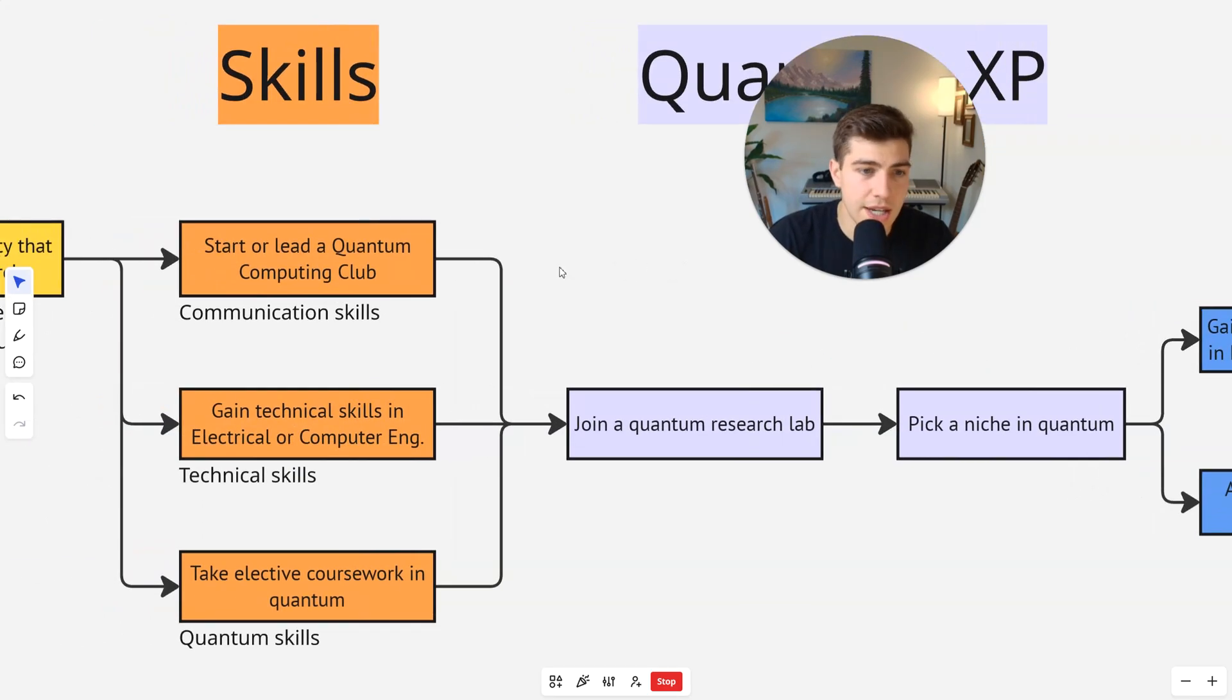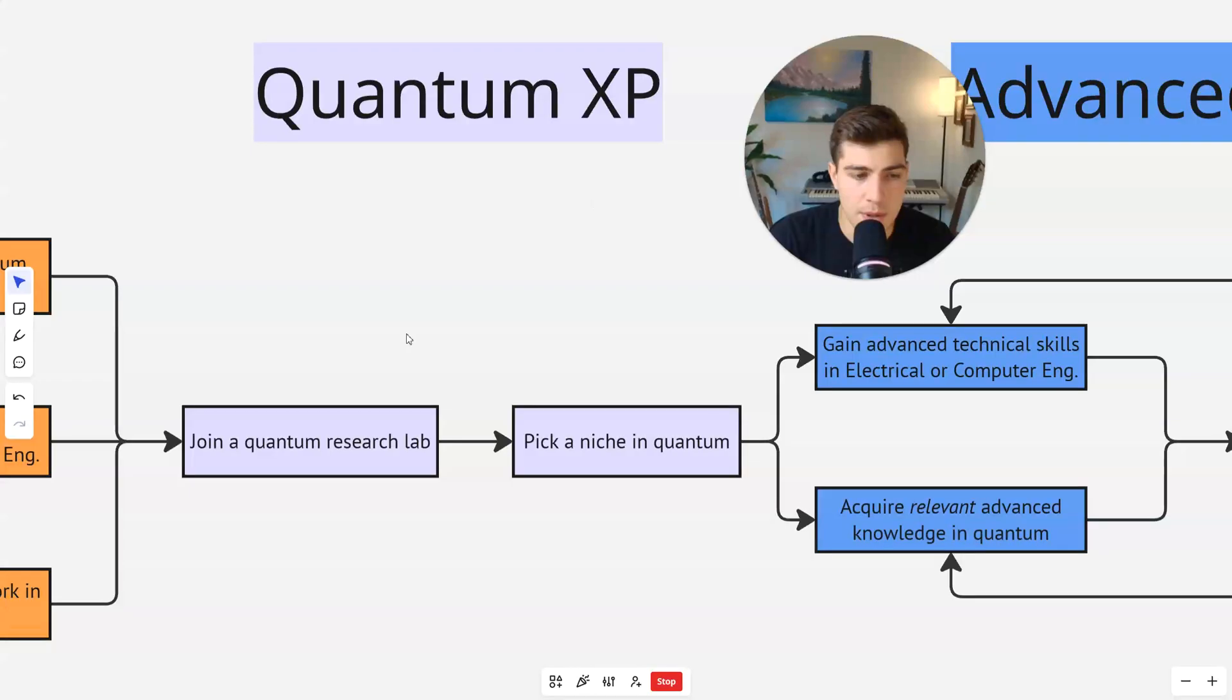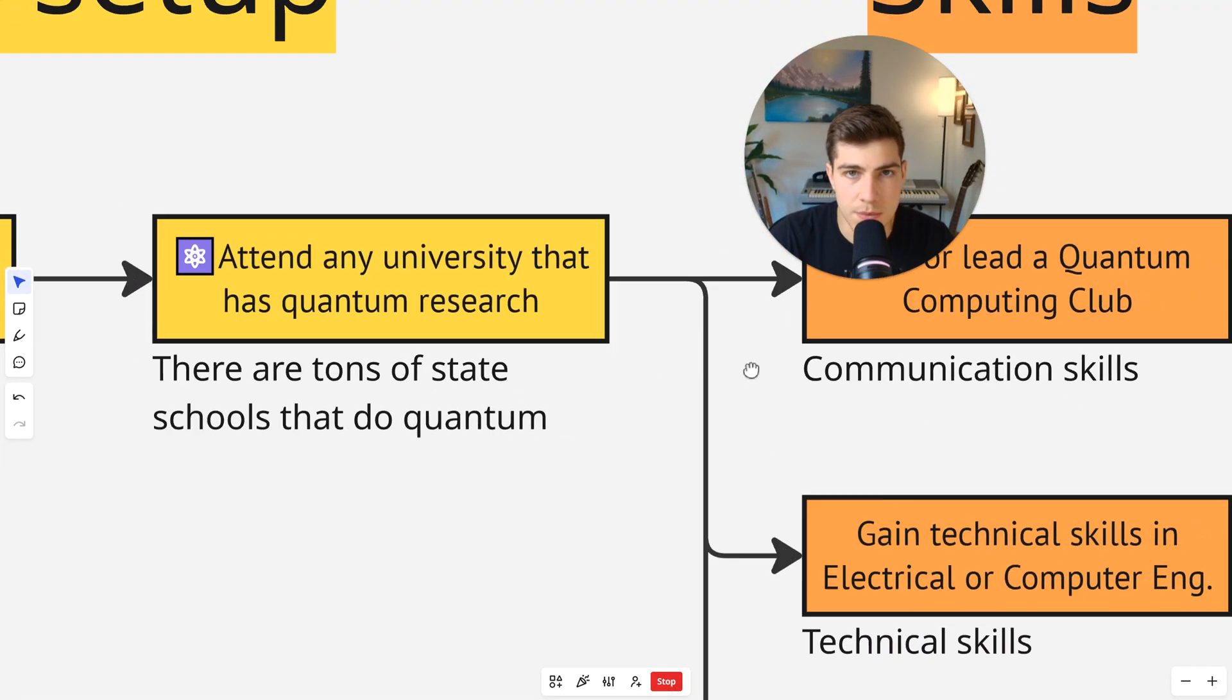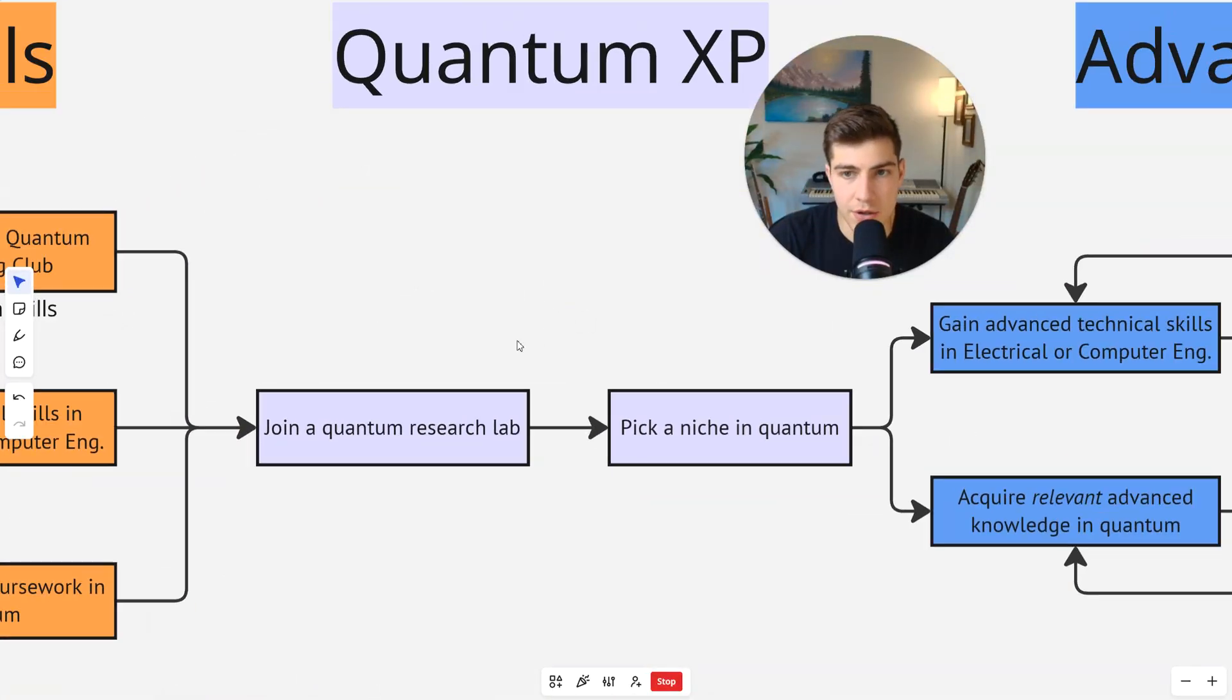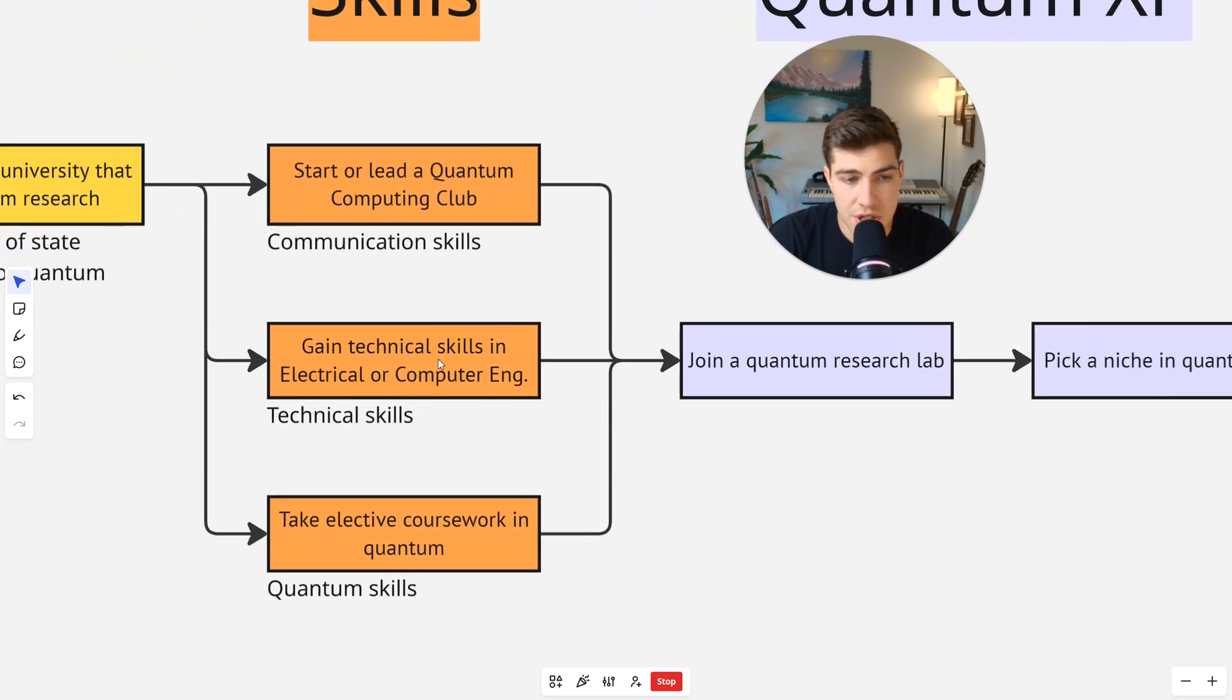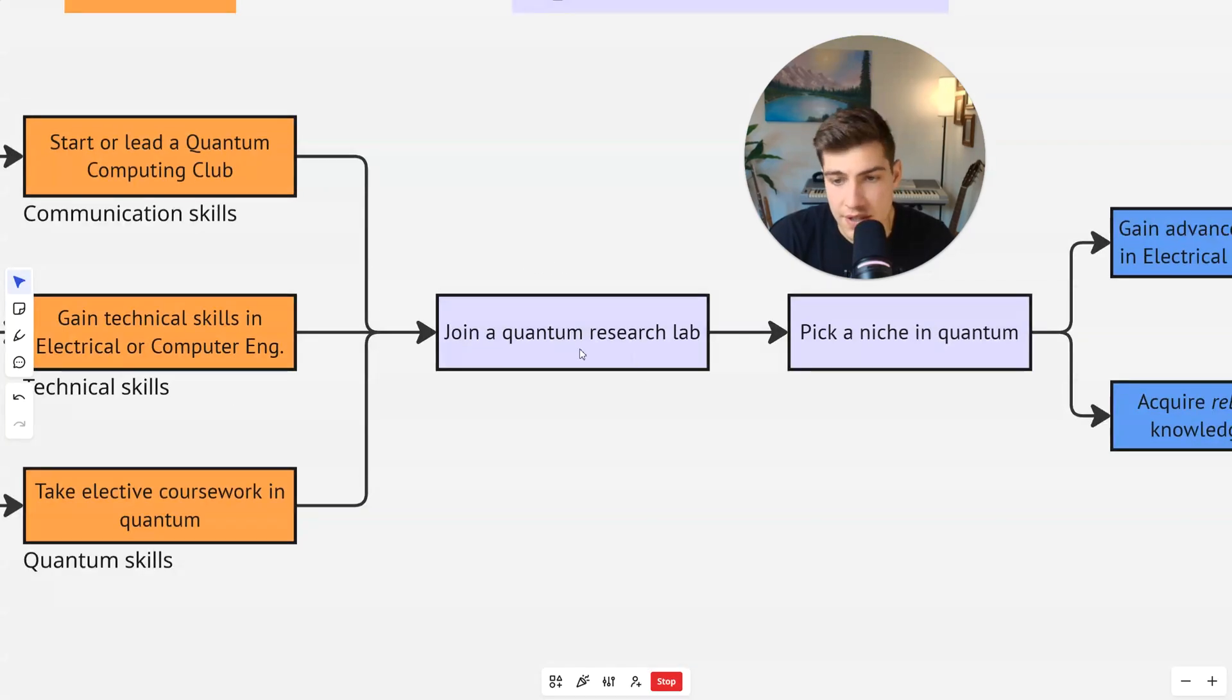So once you have basically enough skills XP to get your first quantum experience, you're going to try to join a quantum lab. Again, this is why you have to attend a university that has quantum computing research. So you're going to join a quantum lab. This is going to be your first experience. And honestly, quantum is so competitive right now that you basically have to have some experience in quantum if you want to ever get an actual job. So the easiest way to do this is to join a research lab in quantum computing using and leveraging your technical skills in standard engineering and the quantum skills that you have started to develop and your communication skills on writing a cold email and interviewing and networking with people to actually get this position.